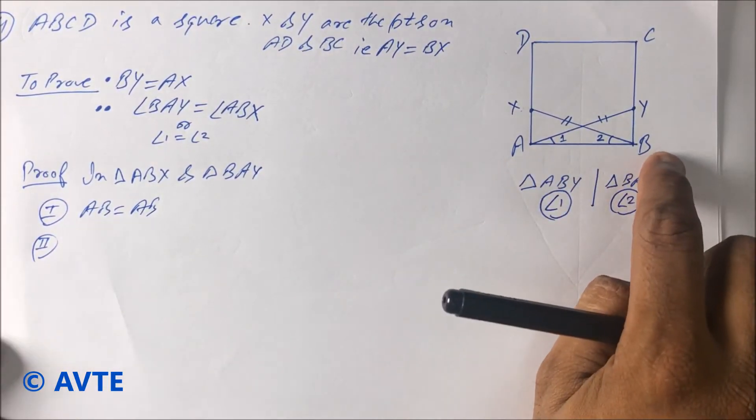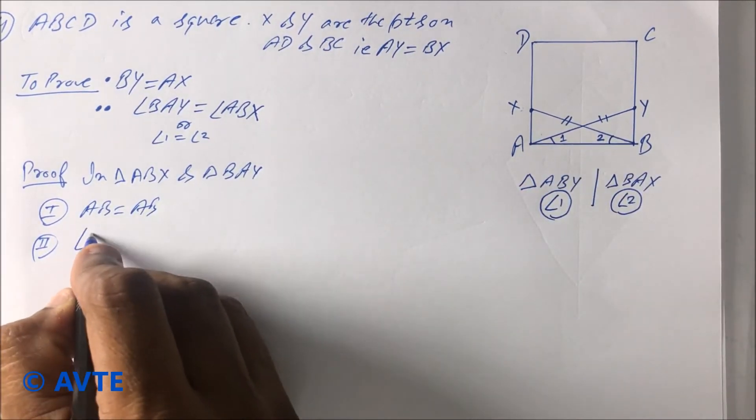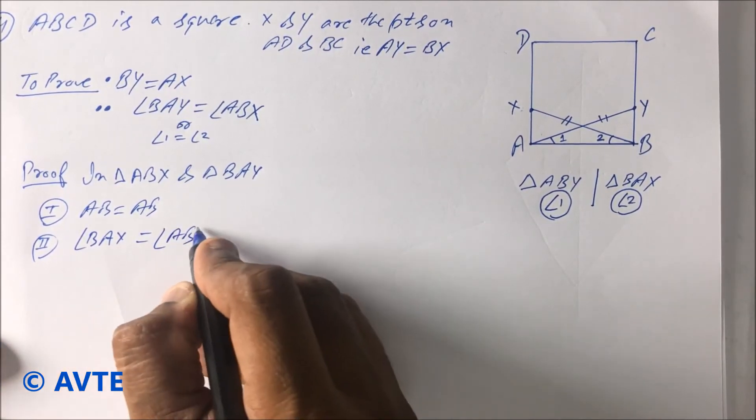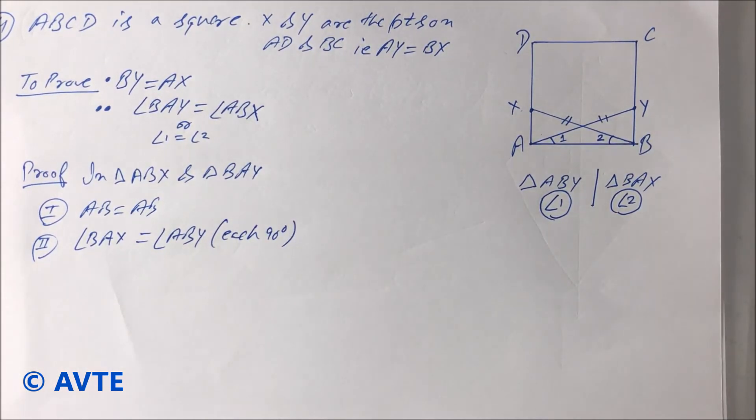And in this, angle A is coming as 90. So angle BAX is equal to angle ABY, that is each 90, because ABCD is a square.